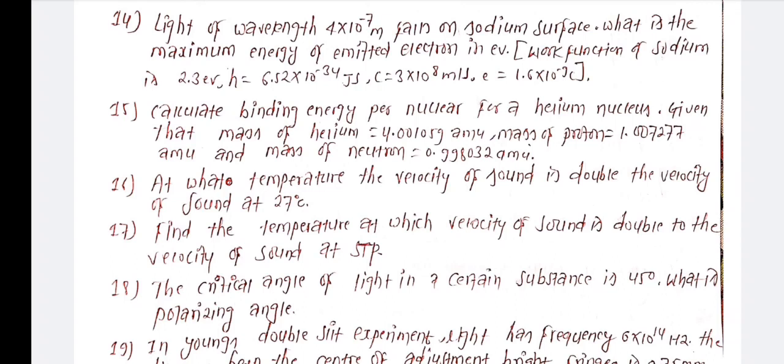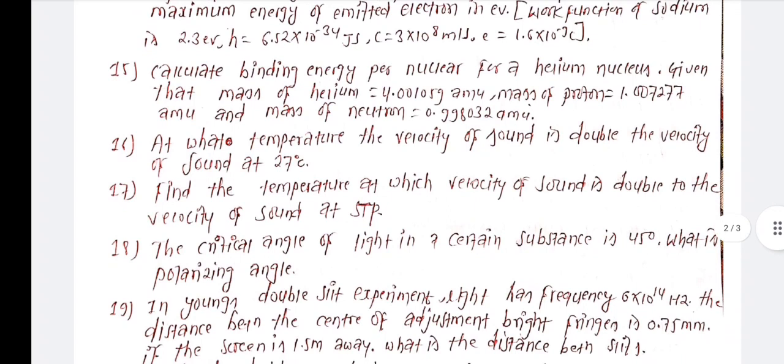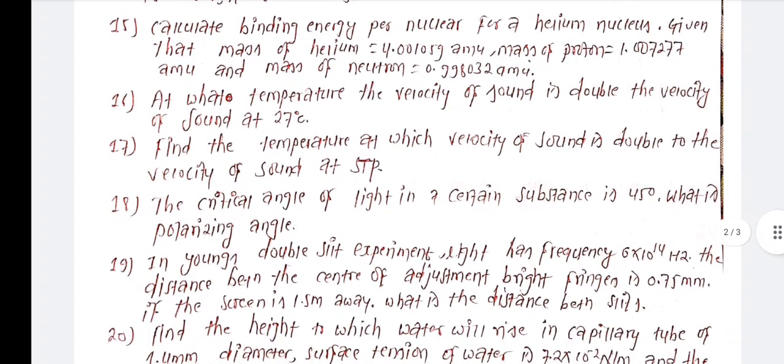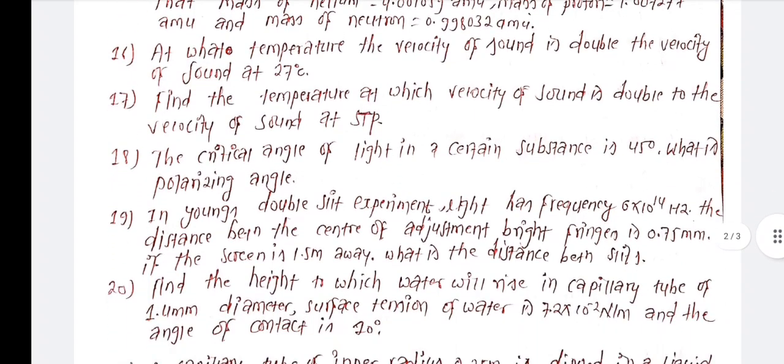In Young's double slit experiment, light has a frequency of 6 into 10 to the 14 Hz. The distance between the centers of adjacent slits is 0.7 meter. If the screen is 1.5 meters away, what is the fringe width?